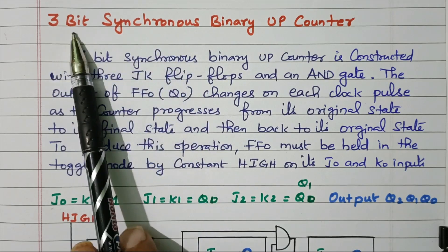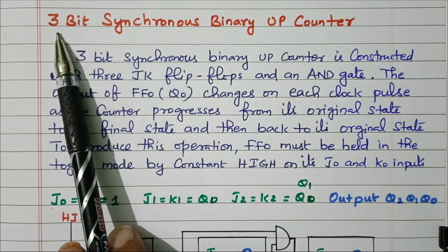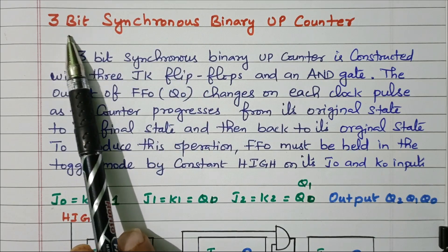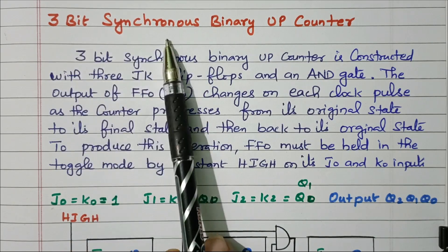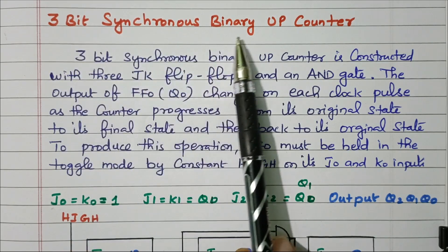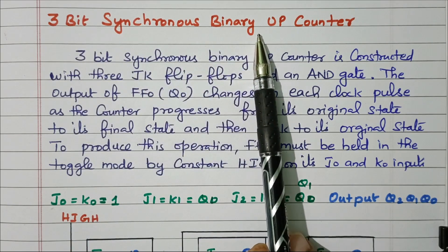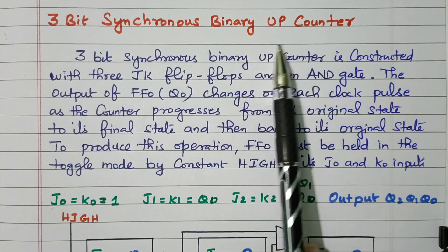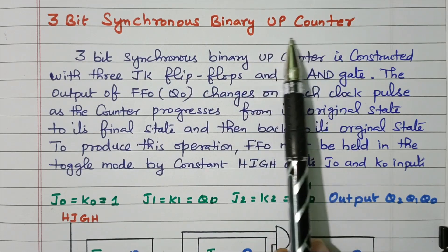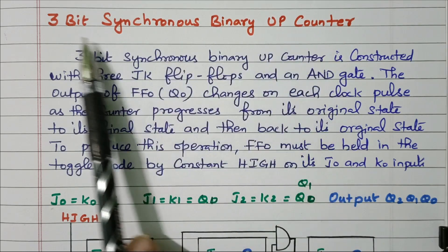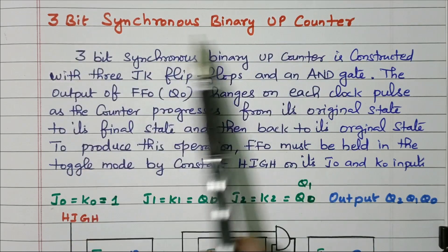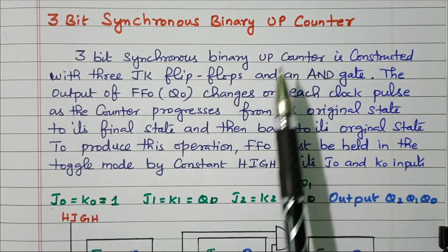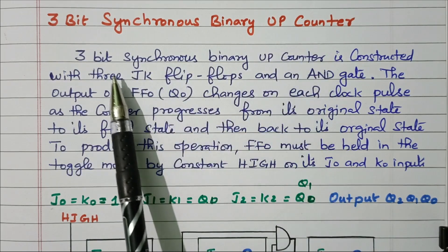Here 3-bit is used. 3-bit means 2 to the power 3 — 8 combinations will be there. So it will count from 0,0,0 to 1,1,1. Eight combinations will be produced by the 3-bit up counter.